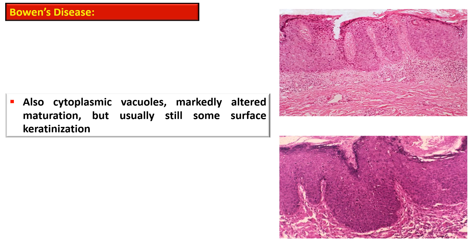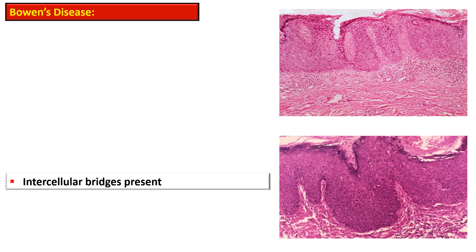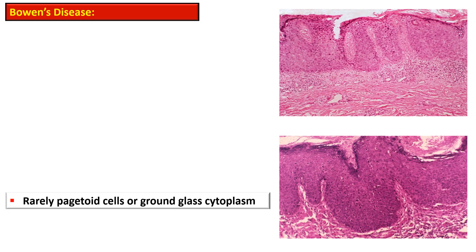There is presence of cytoplasmic vacuoles and altered maturation, yet there is still some surface keratinization. The atypical features may extend into eccrine sweat glands, but this is not considered invasive disease. Intercellular bridges are present in this condition, and rarely pagetoid cells or ground glass cytoplasm may be seen.